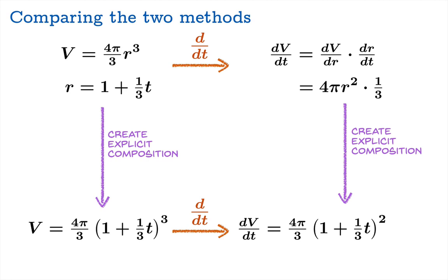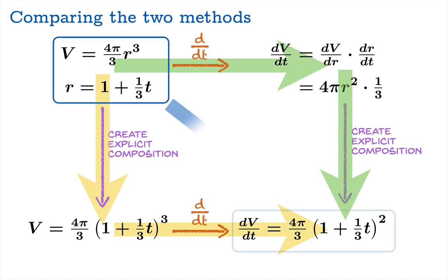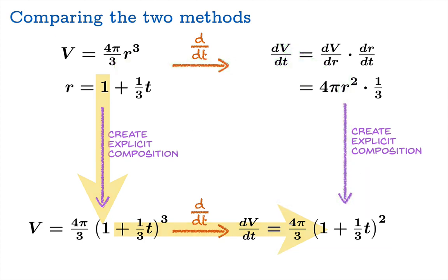So if you look at this diagram, you realize that you could first take the derivative with respect to t, and then you could create an explicit composition, or you could create an explicit composition first, and then take the derivative with respect to t. You should wind up going to the same place. But let's talk a little bit about why you might want to go one way over the other.